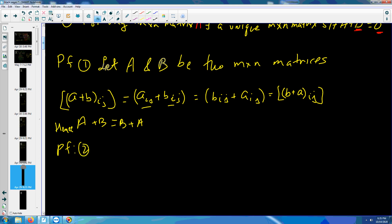Proof of number two. Associative law. Let A, B, and C be n by n matrices. Now, if you have A plus B, the ij element, and you want to add the ij element of matrix C.